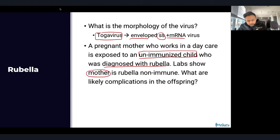Which lymph node group does scrotal inflammation drain into directly? An 18-year-old male after a razor injury presents with scrotal pain, fever up to 38.6, erythema of the scrotum with warmth. Transillumination is negative (not a hydrocele) and cremasteric reflex is intact (not torsion). The answer is the superficial inguinal lymph nodes — the scrotum drains directly there.